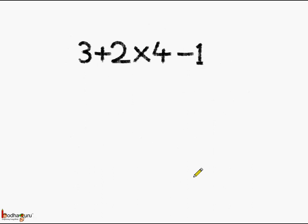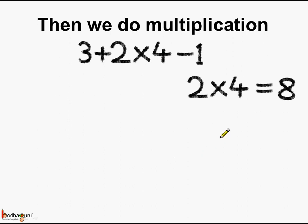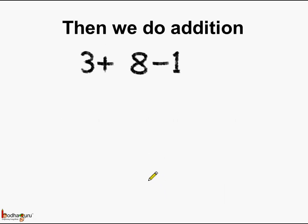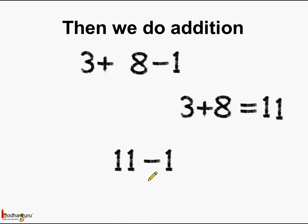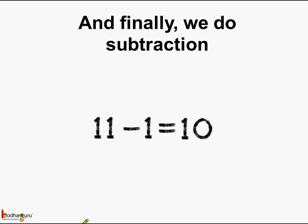Now we do multiplication: 2 into 4 equals 8. The expression becomes 3 plus 8 minus 1. We do addition first: 3 plus 8 equals 11. Then 11 minus 1, and finally we do the subtraction: 11 minus 1 is equal to 10. This is how we solve the problem using the BDMAS rule.